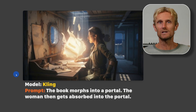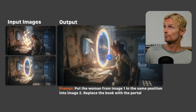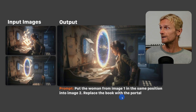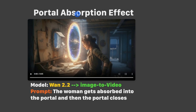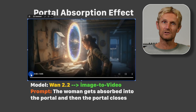To get the woman flying into the portal, I used Nano Banana with the prompt 'put the woman from image 1 in the same position into image 2, replace the book with the portal.' For the portal absorption effect — the 4th effect — I tried image-to-video with Kling, Iluo, and VO3, but nothing really worked. Using model 1.2.2 with the prompt 'the woman gets absorbed into the portal and then the portal closes' gave a result I really liked, though it took a few generations, so I can't guarantee the same result at home.